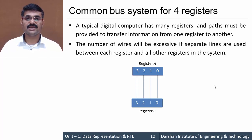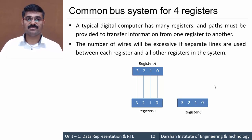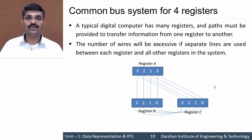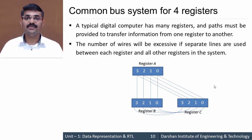Consider we add one more register, Register C. We need to transfer data among Register A and C, and Register B and C, so we need to do wirings between all these registers. By adding only one register, the wiring becomes complex. Now consider we add one more register, Register D. This register D needs to be connected with all three other registers, so you can imagine how complexity increases.